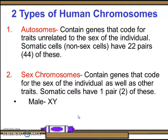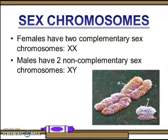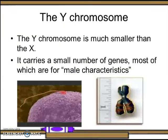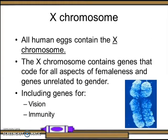Sex chromosomes contain genes that code for the sex of the individual as well as other traits. Somatic cells have one pair, or two, of these — XY for the male and XX for the female. A sex chromosome is a type of chromosome that participates in sex determination. Humans and most other mammals have two sex chromosomes, the X and the Y. The Y chromosome is much smaller than X and carries a small number of genes, most of which are for male characteristics. The X chromosome contains genes that code for all aspects of femaleness and genes unrelated to gender, including genes for vision and immunity.